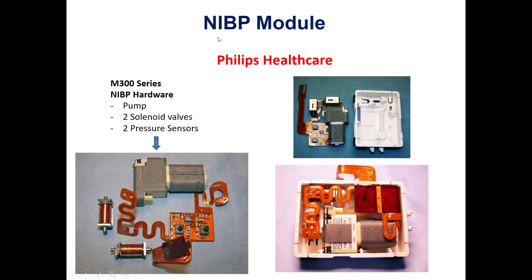The non-invasive blood pressure module is made of three major parts: a rolling pump, two solenoid valves, and two pressure sensors. According to IAC requirements, two pressure sensors are required for a non-invasive blood pressure module used in a vital sign or patient monitor. This module is made by Philips for patient monitors known as the M300 series, which includes two solenoid valves, two pressure sensors, and the rolling pump.